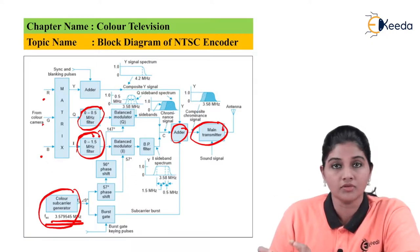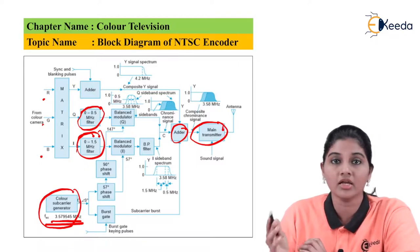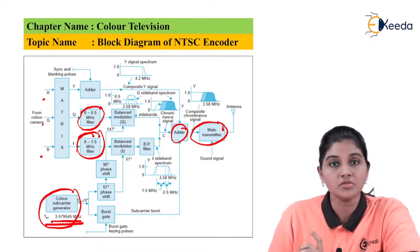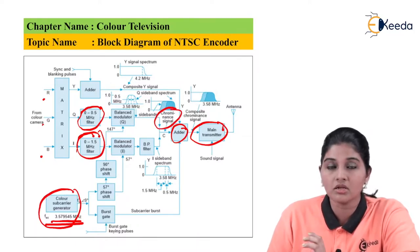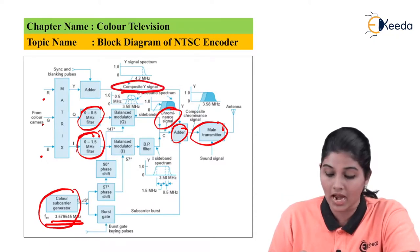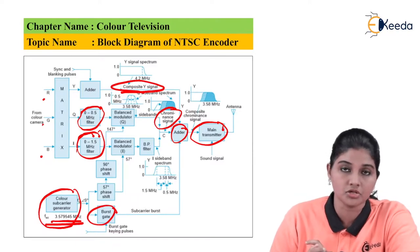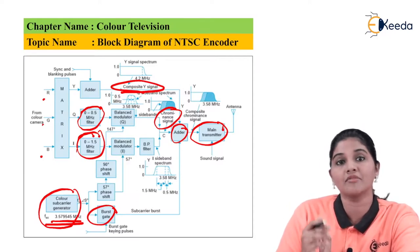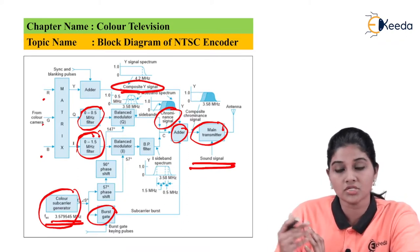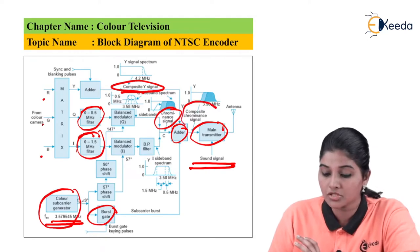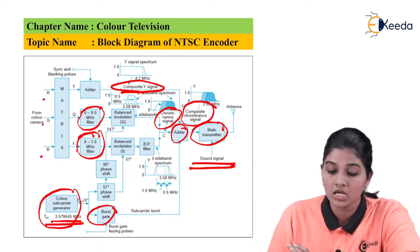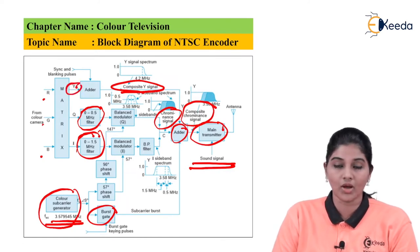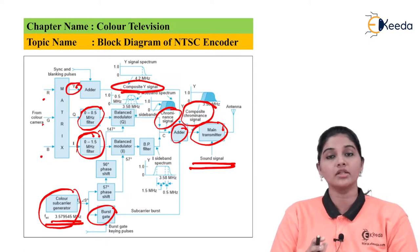The I and Q signals are then given to the adder. Before reaching the adder, the I signal is again frequency-restricted by a bandpass filter. The output of the bandpass filter and the output of the Q balance modulator form the chrominance signal C. The chrominance signal along with the composite Y signal is given as input to the adder, along with the burst gate which provides the color burst. All these signals are mixed together by the adder and provided to the main transmitter circuit, which also takes the sound signal as input. The sync and blanking pulses are also given to the adder so that they are mixed with the luminance Y signal generated by the matrix.